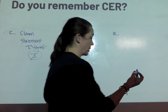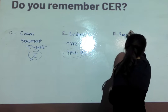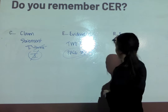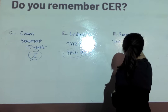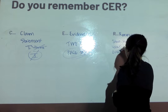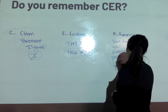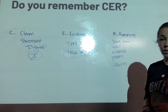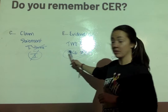The last thing is reasoning. This is the one that I'm going to be really, really focused on. In your reasoning, this is where you show explicitly how your evidence proves your claim — evidence proves claim. You need to show me how this evidence proves this claim.